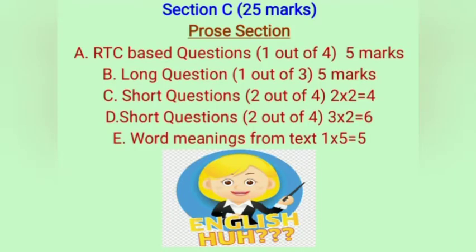In Section C you have Prose, and from Section C you will get 25 marks. There will be an RTC-based question worth five marks — you will get two questions but have to attempt only one. RTC means there will be quoted lines from the textbook followed by two to three questions, and you will have to write the answers.